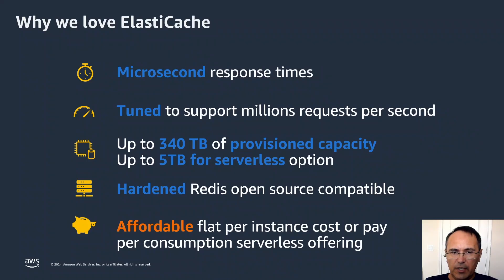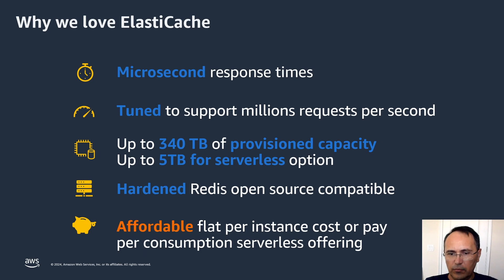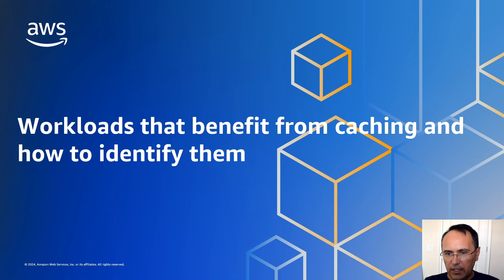Let's look at some numbers. ElastiCache is very fast — we're talking millisecond response times, and it's not just the open-source version; it has been highly tuned for our networks and hardware. It can scale to very large sizes: the instance-based provisioned approach scales up to 340 terabytes in memory, and the serverless currently scales up to 5 terabytes with more in the future. Both have been hardened, supporting encryption at rest and in transit. The provisioned option is a flat fee; the serverless offering is pay-for-consumption.